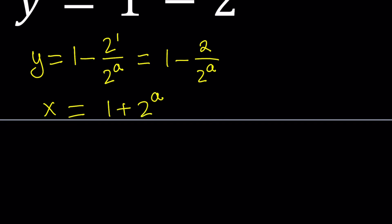So there's basically two ways to go about this. One method would be to solve for 2 to the power a from the second equation. I can just isolate 2 to the power a. That would be x minus 1. And then I can substitute that into the other equation, which has 2 to the power a in the denominator.